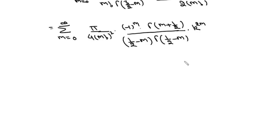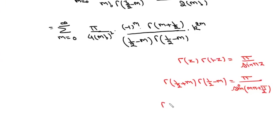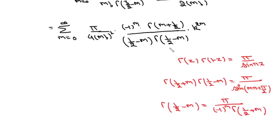We now use the same reflection formula used for the elliptic integral of the first kind, which is Γ(z)·Γ(1−z) = π / sin(πz). So we can write Γ(1/2 + m)·Γ(1/2 − m) = π / sin(mπ + π/2). Since sin(mπ + π/2) = (−1)^m, we get Γ(1/2 − m) = π / ((−1)^m · Γ(1/2 + m)).